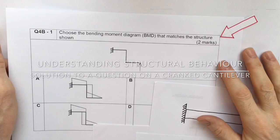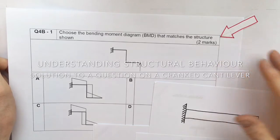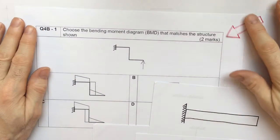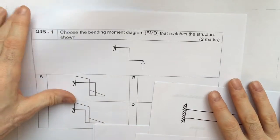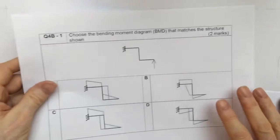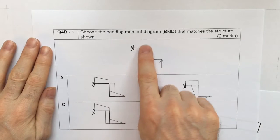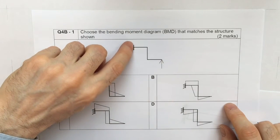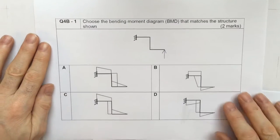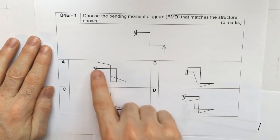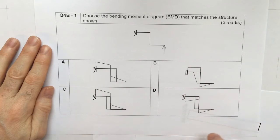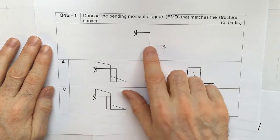Hello, here's a video about understanding some structural behavior and it's an exam question that we use at our university. It's a kind of dog-legged cantilever with a single point load at one end and it's fixed at the opposite end, and the question says which of these bending moment diagrams matches the actual bending moment diagram for this structure.